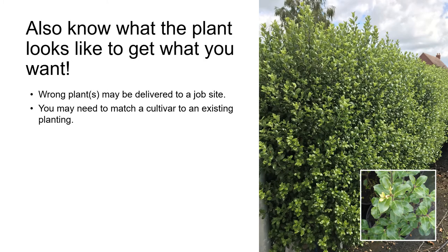While knowing the full botanical name is really important, it's also really important to know what the plant looks like and to be able to tell the difference between it and close relatives, so that you really do get the plant you want. Occasionally, even when you use the full botanical name, the nursery supplying the plants delivers the wrong plant. For example, a few years ago a landscape contractor I know took delivery of a plant order that was supposed to include the California native grass California fescue, Festuca californica. The nursery instead delivered Stipa tenuissima, Mexican feather grass, which is not a native grass and is actually quite invasive. This could have been a big mistake if the contractor hadn't known the difference between these two grasses and been able to reject the Mexican feather grass on the spot.